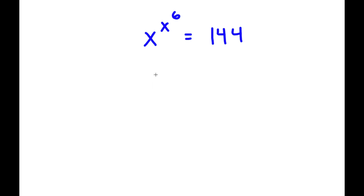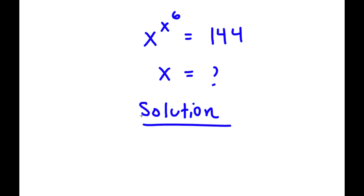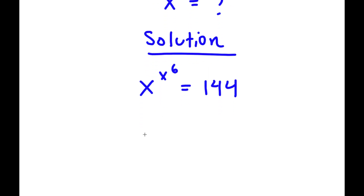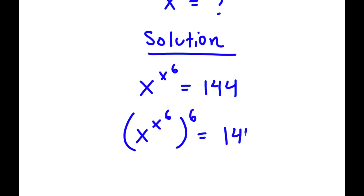In this problem, I have x to the power of x to the power of 6 is equal to 144, and I want to find the value of x. For my solution, I start with x to the power of x to the power of 6 is equal to 144. Now I'm going to take the power of 6 on both sides, so I have x to the power of x to the power of 6, all to the power of 6, is equal to 144 to the power of 6.